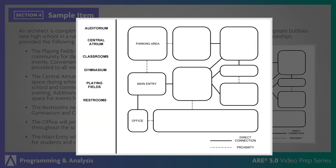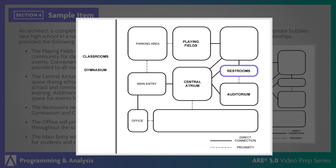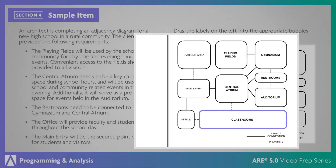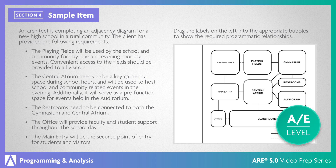To complete this bubble diagram, you'll need to understand the spatial relationships of the high school as they relate to the program and the client's requirements. The playing fields require convenient access for both daytime and evening activities, making the best location within close proximity to the school as well as the parking area. The central atrium should be located central to the major program spaces, with a connection to the main entry for secured access for evening events. Since the central atrium is also a pre-function space for the auditorium, the spaces should be directly connected. The restrooms have a direct connection between the gymnasium and central atrium, while also being in close proximity to the auditorium. The classroom's proximity to the office provides convenient access for faculty and student support throughout the school day. This is an AE level item requiring the analysis of horizontal functional relationships as they relate to the building program and client requirements.